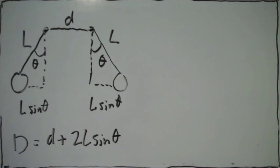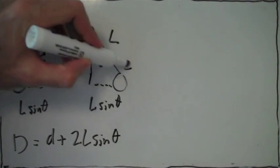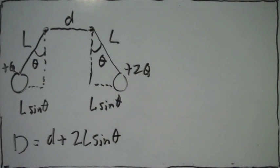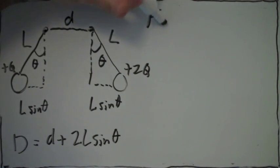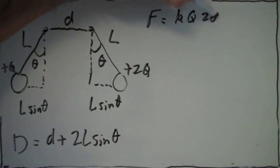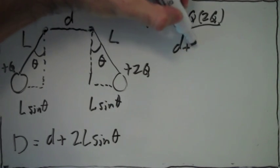So we're told that one of the masses has a charge of positive Q, and the other one has a charge of positive 2Q, because it has twice as much charge as the first one. So the force of repulsion, the electric force of repulsion, is this between the two masses.